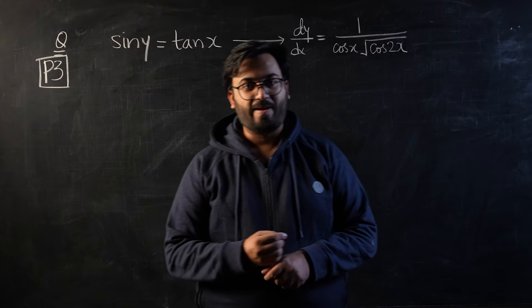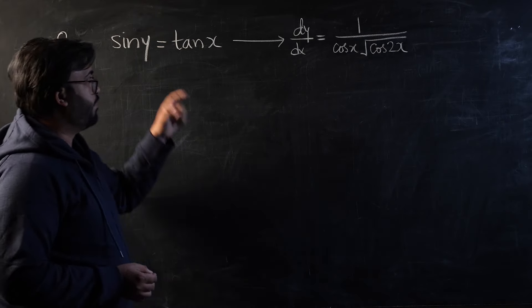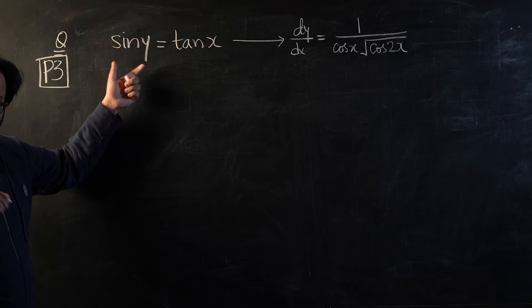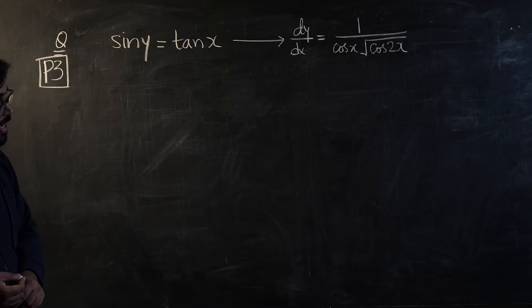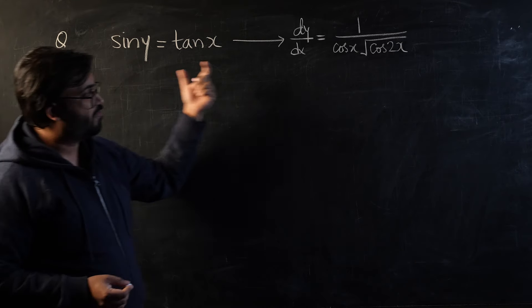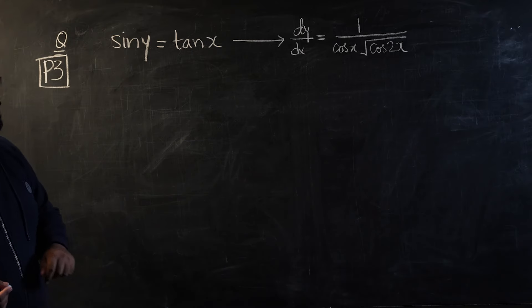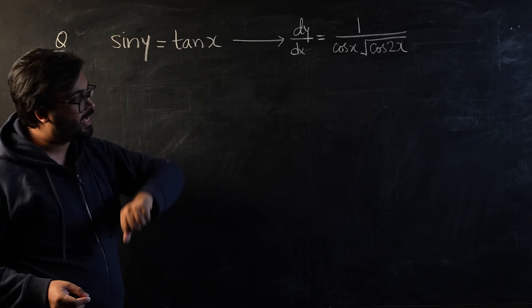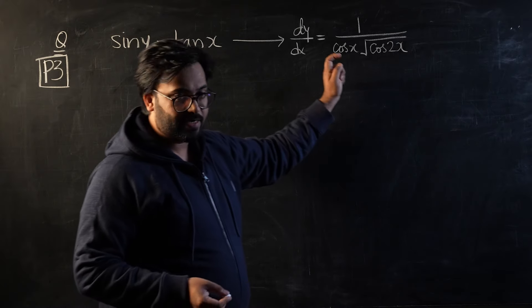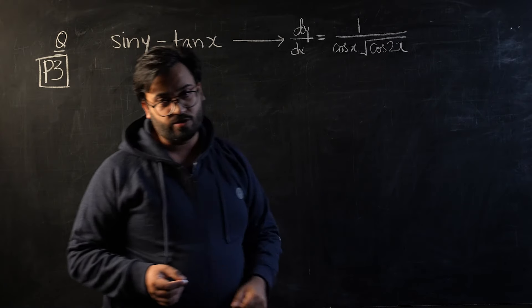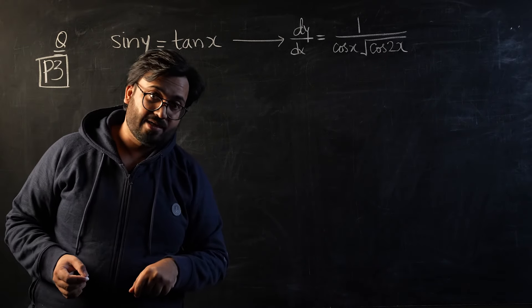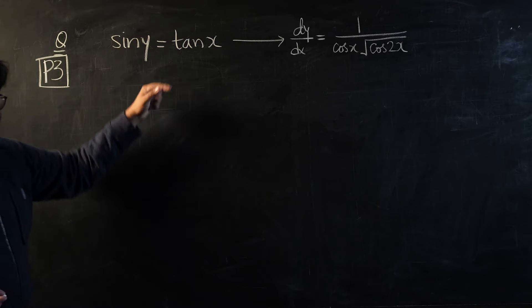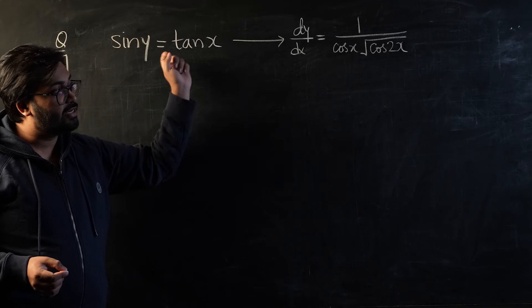Hello guys, welcome to your daily dose of mathematics. Today's question is Paper 3, implicit differentiation, and this is considered to be one of the very tricky questions. It's very difficult to maneuver from this form to this form once you are differentiating. The question is pretty simple: sine y equals tan x, and you have to differentiate it and show that dy/dx equals the given expression. The differentiation part is going to be easy — the trick is how you maneuver once you're done.